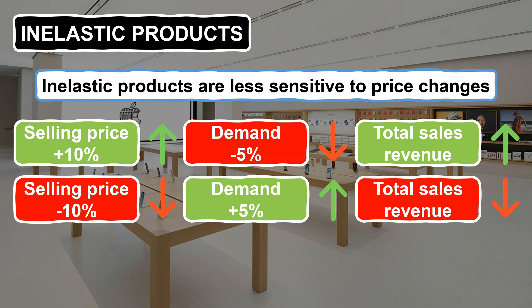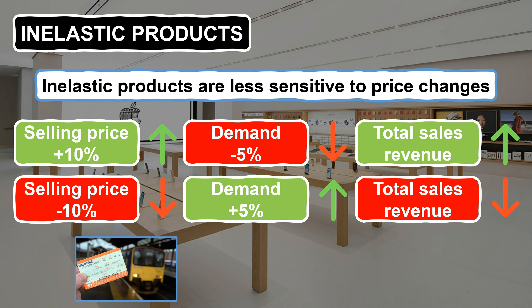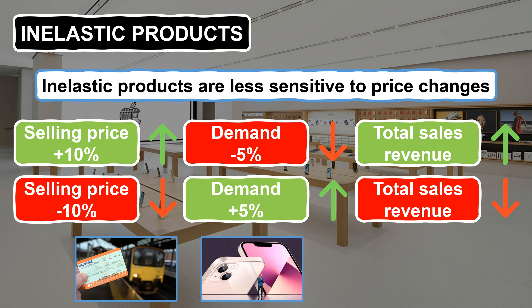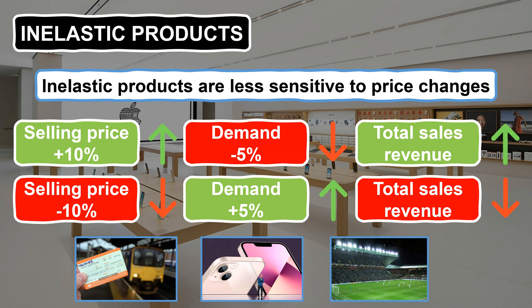Examples of products with inelastic demand include train tickets for commuters who rely on the train to get to work, especially those who work in London. If a ticket price were to increase, it's very likely that demand will only fall by a marginal amount as it is a necessity and alternatives during peak hours are limited. Apple products such as the iPhone are also inelastic as they have several USPs — such as Apple's operating system — and very strong brand loyalty. Tickets for high-end sporting events such as Premiership Football and Formula One are also inelastic, as fans are committed to their teams and have high levels of loyalty.